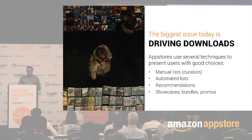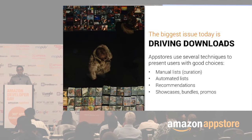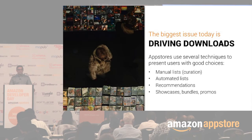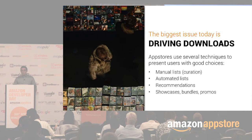There's so much content out there, and app stores have evolved techniques to avoid inundating their customers with this mountain of content. They curate, they provide automated lists that highlight apps based on genre or sales, they have recommendations. Amazon has a great recommendation engine that looks at purchases you've made in the past and compares to other users. Every app store also has some kind of showcase or bundle system that allows them to promote specific apps they want to give extra attention to.